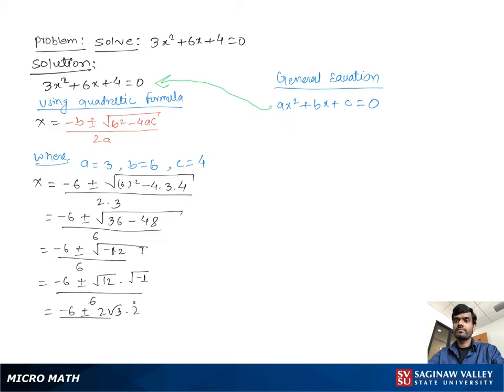i is denoted as square root of negative 1 over 6. Then we take out the 2 as a common factor, we get negative 3 plus minus square root 3 i over 6.